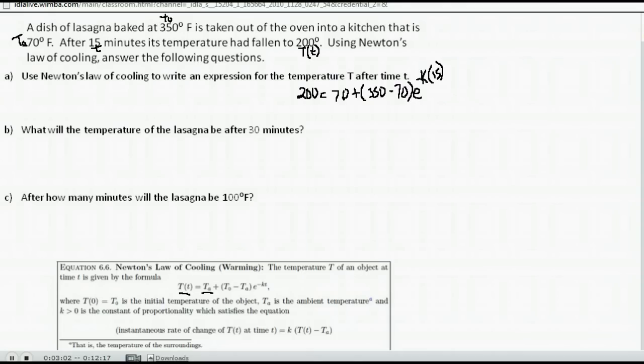So this is what I know. Let's do some simplifying, if we can. So right now, I have 200 is equal to 70 plus, let's go ahead, we know the 350 and the 70 in parentheses, so let's just go ahead and subtract those. 350 minus 70 gives me 280, e to the negative K times 15.